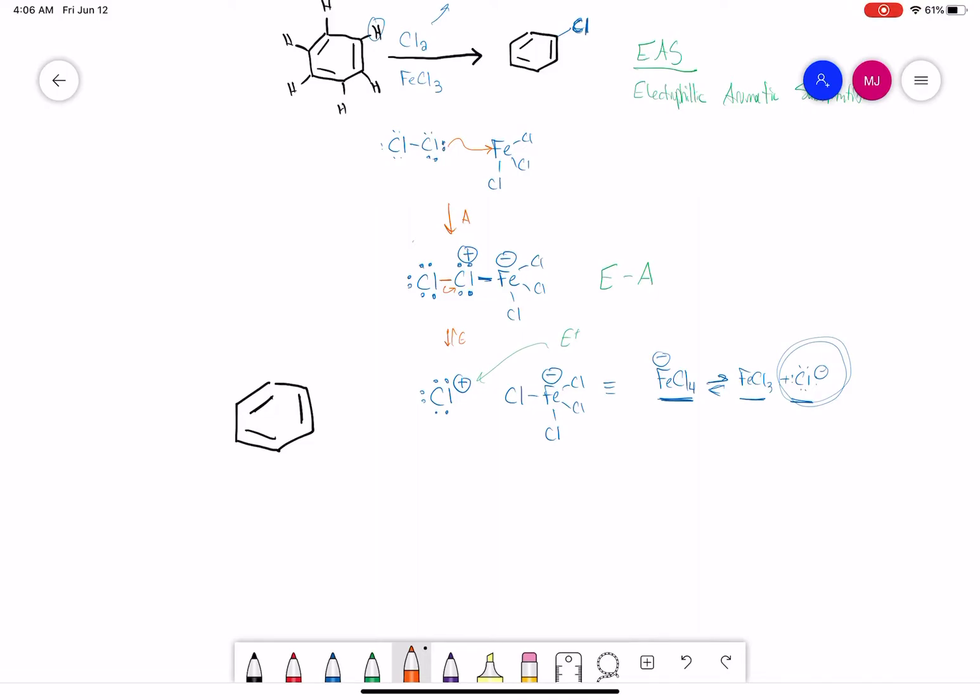So we can have our double bond either attack this chlorine and break that chlorine-chlorine bond, or we can just have this attack the Cl plus, either or.